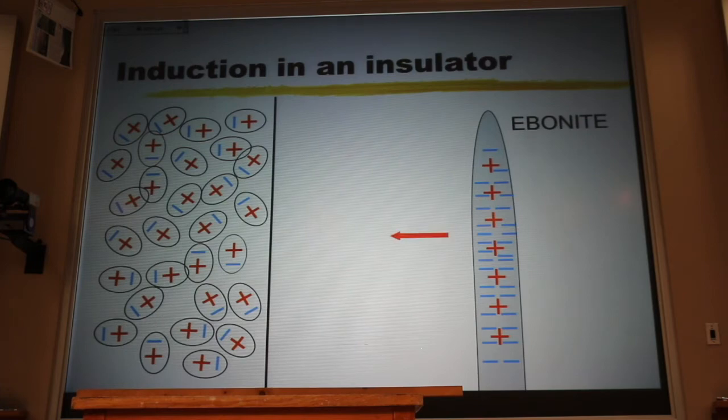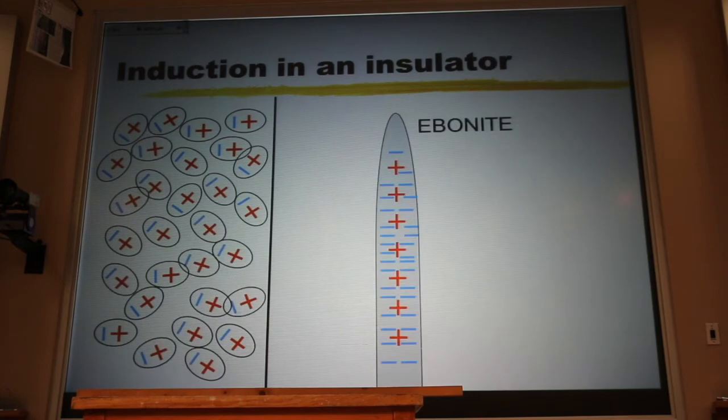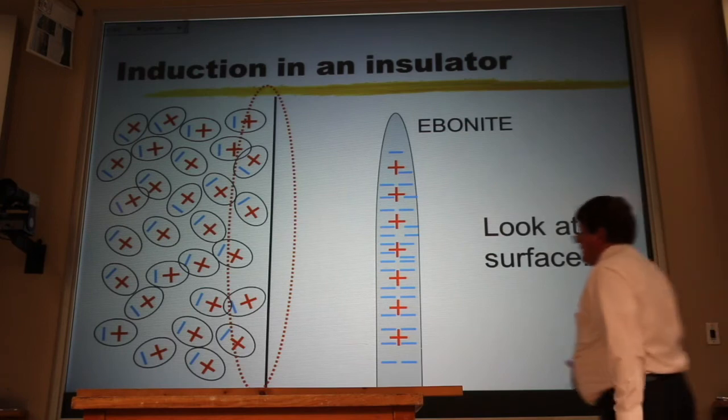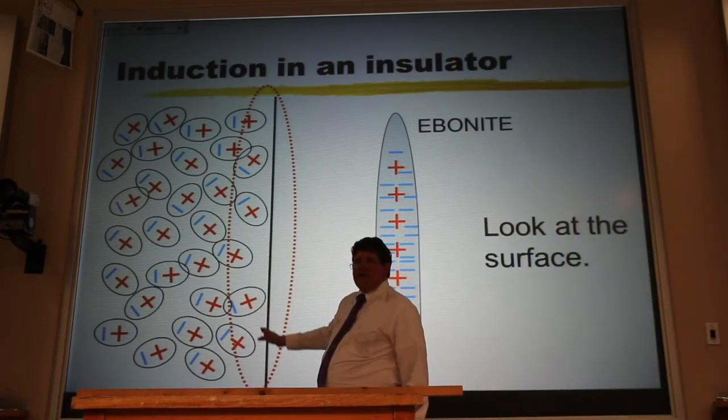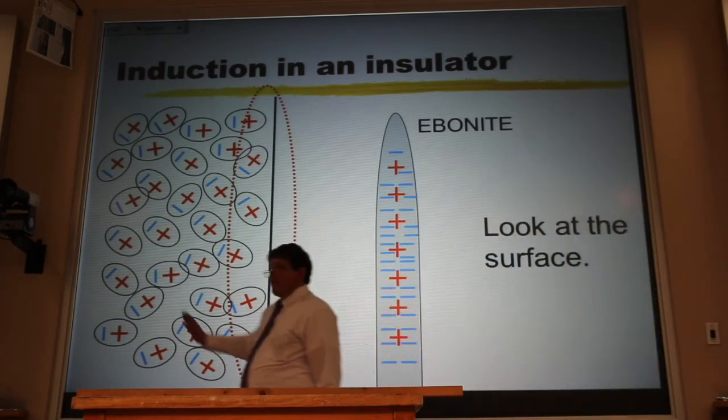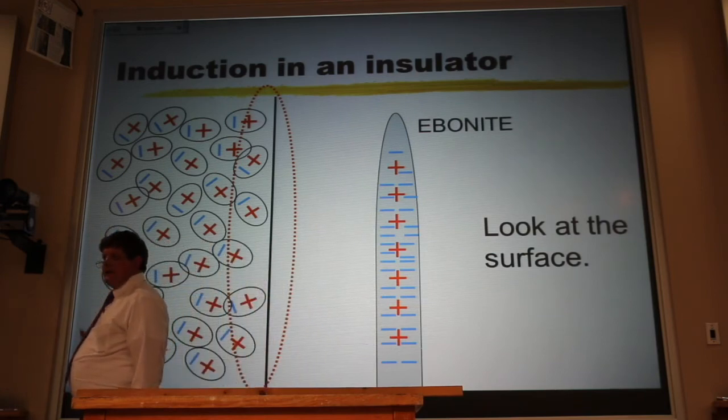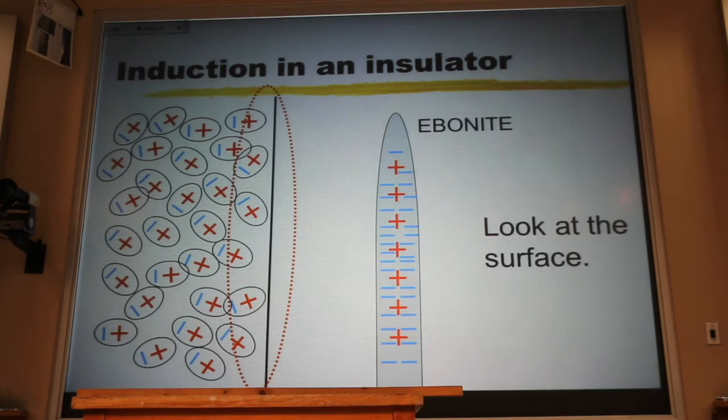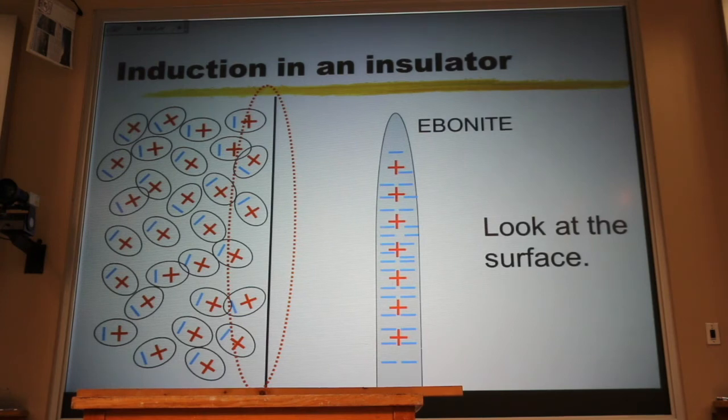But the molecules can be jiggled. And the closer I bring that rubber rod, the more jiggling that occurs. Now, if I look at the surface, right here I find a layer of positive charge. I will find on the other side of the door a layer of negative charge. It's like I bring this rubber rod. Let's say that you are molecules of wood. And each of you is polarized so that your head is positive because it thinks, and your feet are negative because they stink. That's a visual.